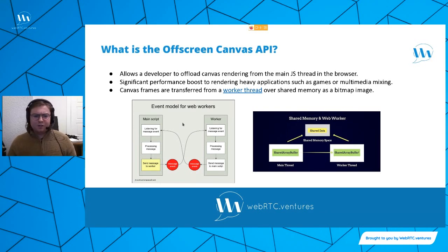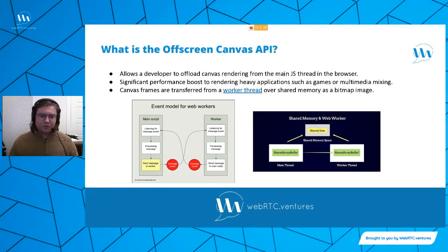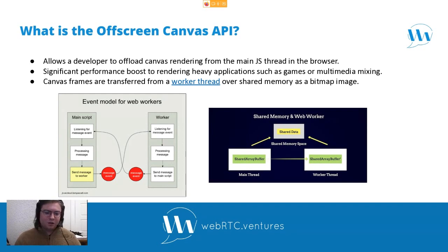This allows for a significant performance boost when doing things like media multiplexing or heavy applications like games or 3D rendering. Canvas frames are transferred to a worker thread — a separate thread in the browser's JavaScript environment — and the bitmap image of the canvas is actually shared as a shared memory space between the main thread and the worker thread, so the main thread can display the canvas while the worker thread does the heavy lifting. There are diagrams and a lot of documentation on the Mozilla Developer Network site if you want more detail on the back-end implementation.